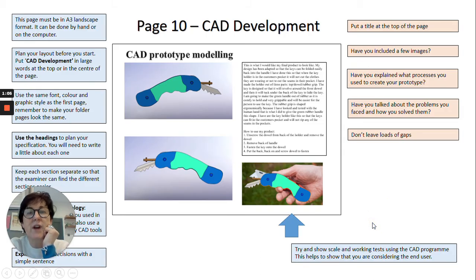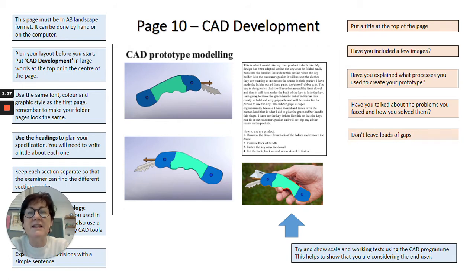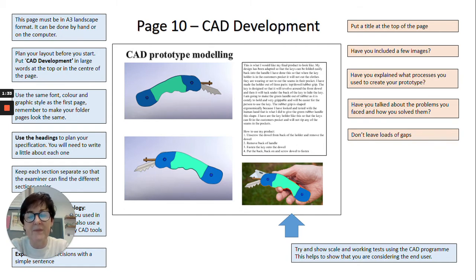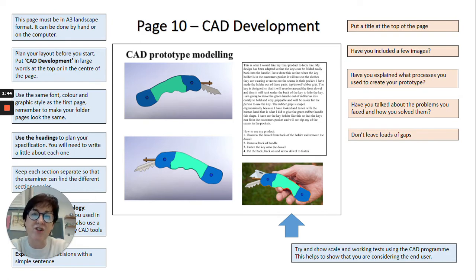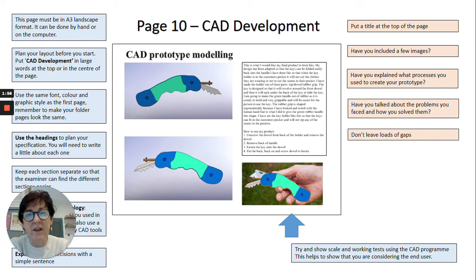First of all, think about the layout of this page — it's important that it follows the same format as all your other pages. Make it very clear that this is a CAD prototype page. The best way to do this is to take screenshots as you're going along. A CAD program can take a long time to produce an end product — it can take weeks from start to finish — so it's a good idea to take screenshots as you go so that you've got a record. Some programs like SOLIDWORKS will enable you to roll back your design to take a snapshot from the finished model. Always show some indication of how your design progressed through the CAD program — a beginning, a middle, and an end.